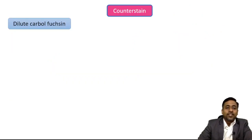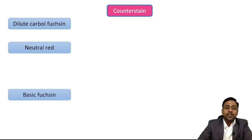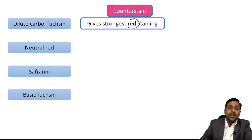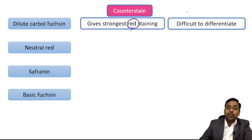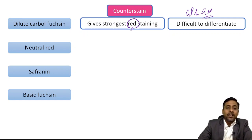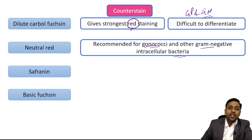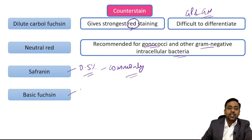The counter stains which can be used are: first, dilute carbol fuchsin; second, neutral red; third, basic fuchsin; and fourth, safranin. Dilute carbol fuchsin gives the strongest red stain color — it is difficult to differentiate gram-positive from gram-negative when it is used, so it is usually avoided. Neutral red is recommended for gonococcal staining and other gram-negative intracellular bacteria. Safranin is commonly used as a 0.5% solution, and basic fuchsin can also be used in routine staining.